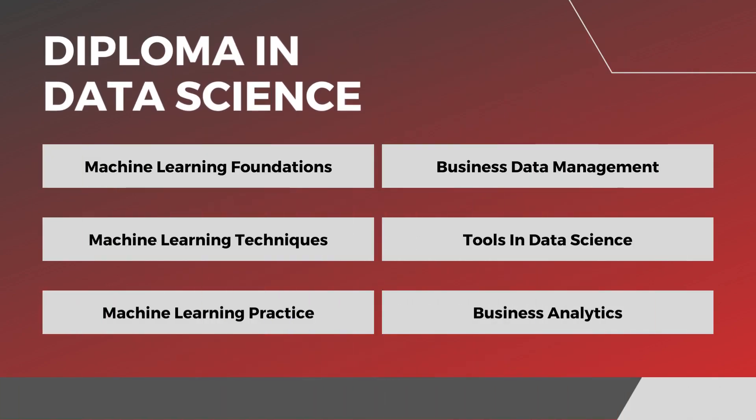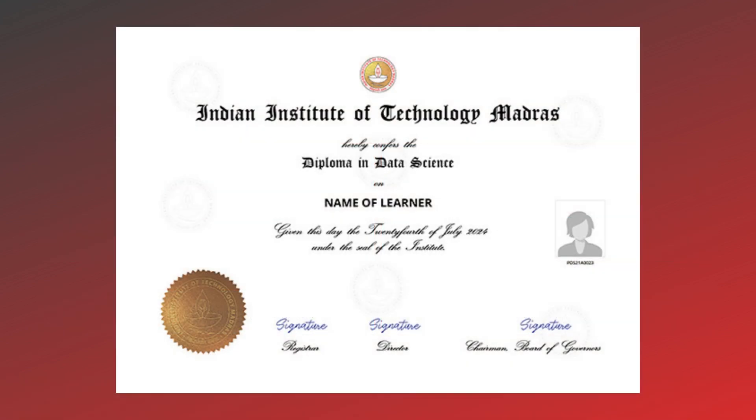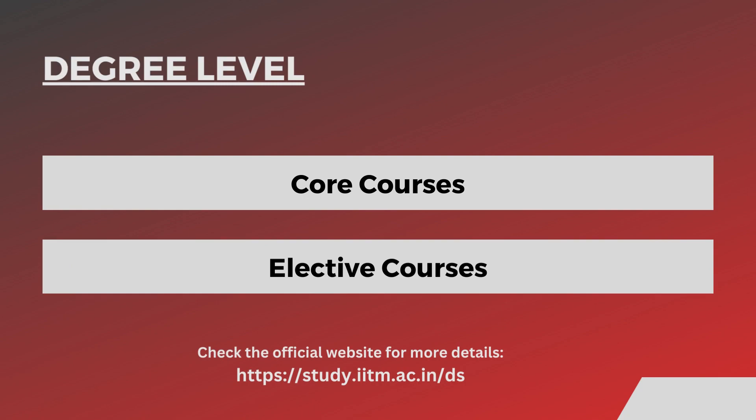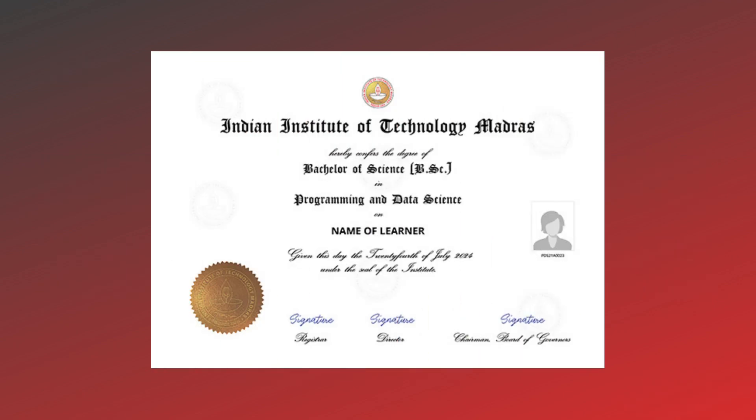In the Diploma in Data Science, these are the courses, and after completing these courses you will get the diploma certificate. At the degree level, there are two types of courses: core courses and elective courses. You can check the official website for more details — I will put the link in the description box. After completing the first degree, you will receive the corresponding certificate.